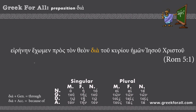Our final worked example comes from Romans — entirely in Greek. 'Eirenen echomen pros ton theon dia tou Kuriou hemon Iesou Christou.' 'Eirenen' means peace, 'echomen' means we have. 'Pros ton theon' means 'with God.' Then dia followed by 'tou Kuriou' — we can see the genitive ending, so dia means 'through.' Full translation: 'We have peace with God through our Lord Jesus Christ.'